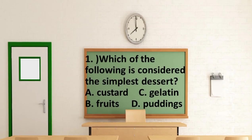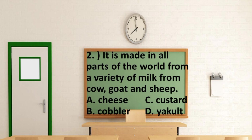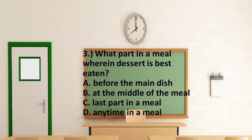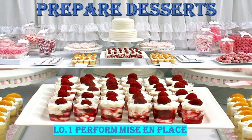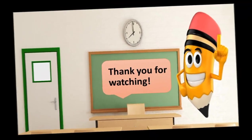Number one: Which of the following is considered the simplest dessert? A. Custard. B. Fruits. C. Gelatin. D. Puddings. Number two: It is made in all parts of the world from a variety of milk from cow, goat, and sheep. A. Cheese. B. Cobbler. C. Custard. D. Yakult. Number three: What part in a meal is dessert best eaten? A. Before the main dish. B. At the middle of the meal. C. Last part in a meal. D. Anytime in a meal. Did you copy? Screenshot and answer. So did you learn something from our topic for today? I will end my class with a saying: there is always a feeling that your meal will never be completed without a dessert, because desserts really satisfy our meal. Thank you for watching and see you all next meeting.